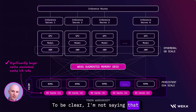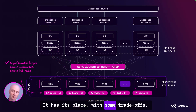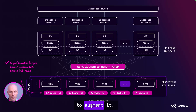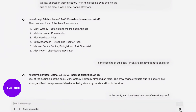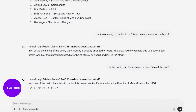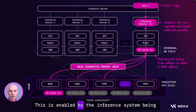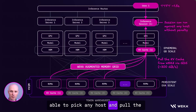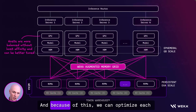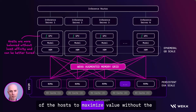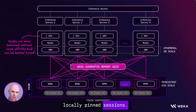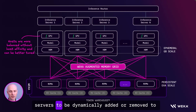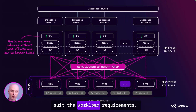To be clear, I'm not saying that DRAM shouldn't be used — it has its place with some trade-offs. We aren't here to replace it, we're here to augment it. As I ask follow-up questions, you can see I have an almost immediate response. This is enabled by the inference system being able to pick any host and pull the KV cache directly into GPU memory as it's needed in real time. Because of this, we can optimize each host to maximize value without focusing on headroom for locally pinned sessions. We can also allow for pools of GPU servers to be dynamically added or removed to suit the workload requirements.